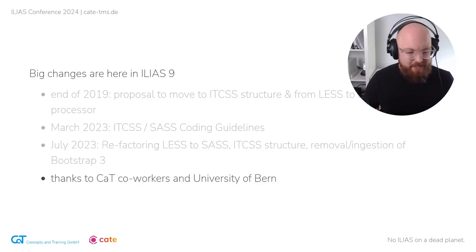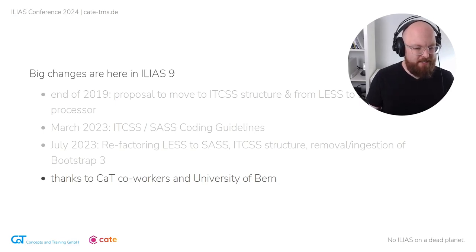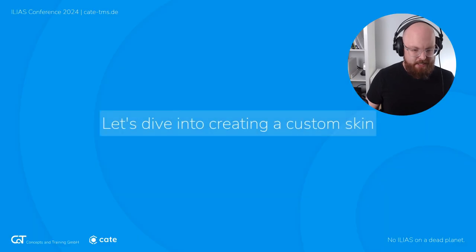We couldn't update Bootstrap because we relied on the old preprocessor Less, and the new preprocessor Sass is used for the new versions of Bootstrap. So one big part of that project was to ingest the code of Bootstrap that we need and kick out a lot of unused code. Through this, Delos is now a lot more structured and tidier, and we got rid of a lot of dead weight. I also had a lot of help from my co-workers at CAT and support from the University of Bern, which was really great.